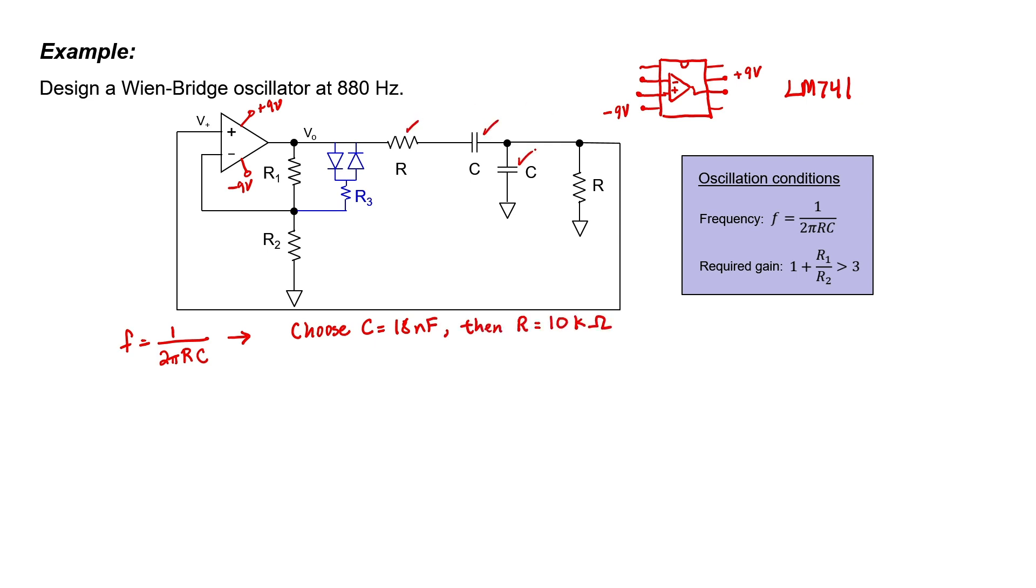We need an amplifier gain greater than 3. If it's just slightly greater than 3, then it might not be enough to overcome parasitic losses in the circuit. Let's give it a gain of at least 4. The gain will nominally be 4.3 when the diodes are turned off. I have chosen a resistor R sub 3 of 22 kilo ohms.